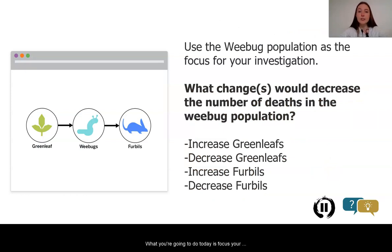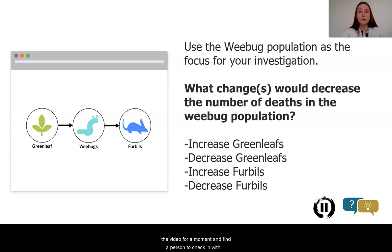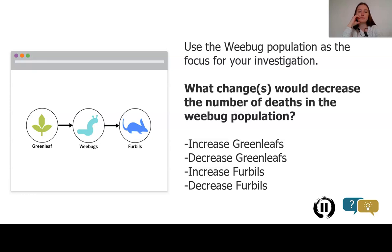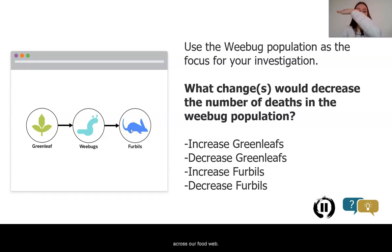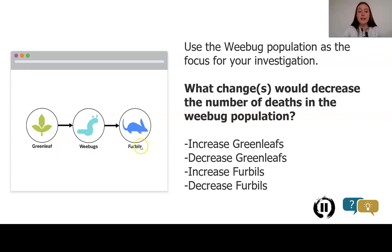What you're going to do today is focus your investigations on the wee bug population. As we focus on the wee bugs, I want you to pause and check in with a friend — ask yourself what is the consumer and the resource population for the wee bugs. Looking at our food web, energy storage molecules are transferred so that the green leaves are the resource population for the wee bugs, and the furbles are the consumer population of the wee bugs. The furbles eat the wee bugs and the wee bugs eat the green leaves.